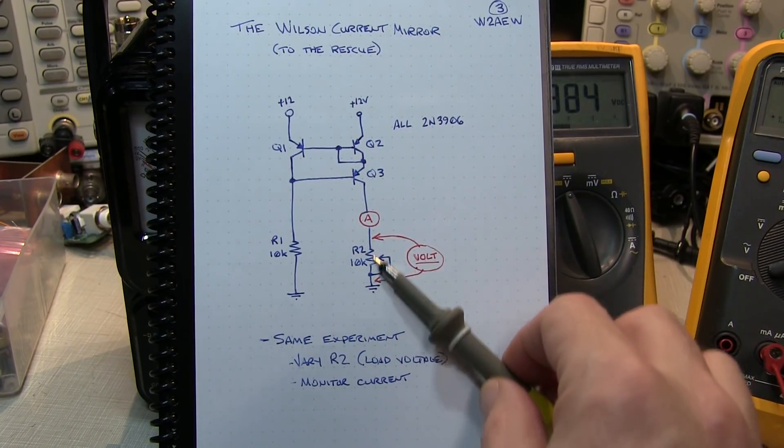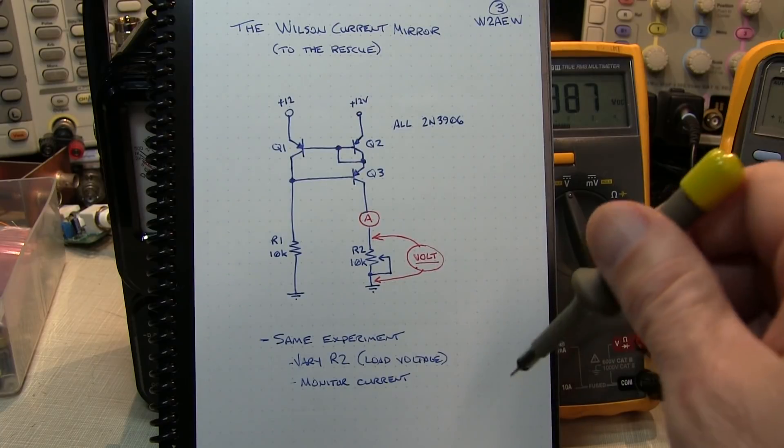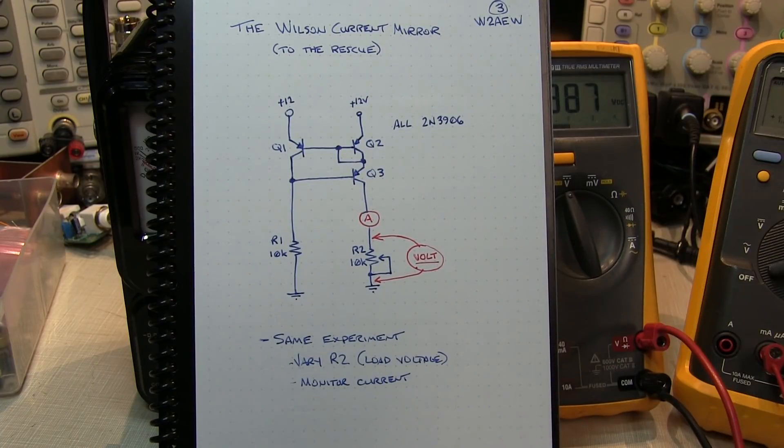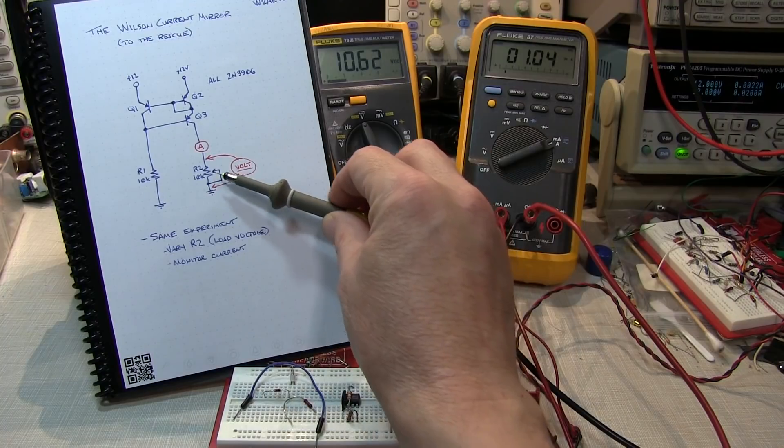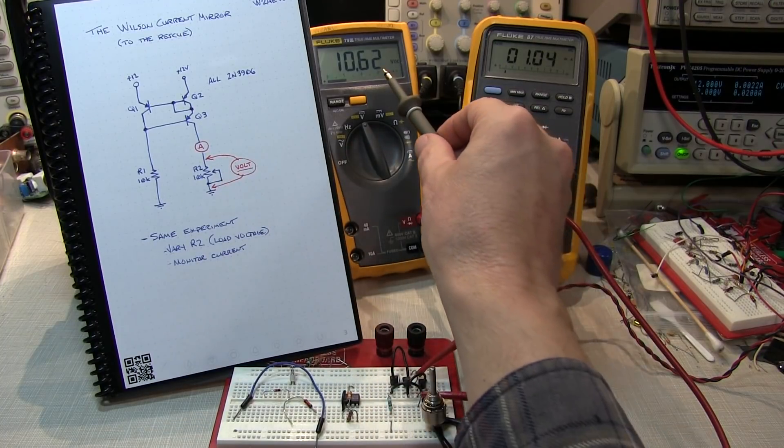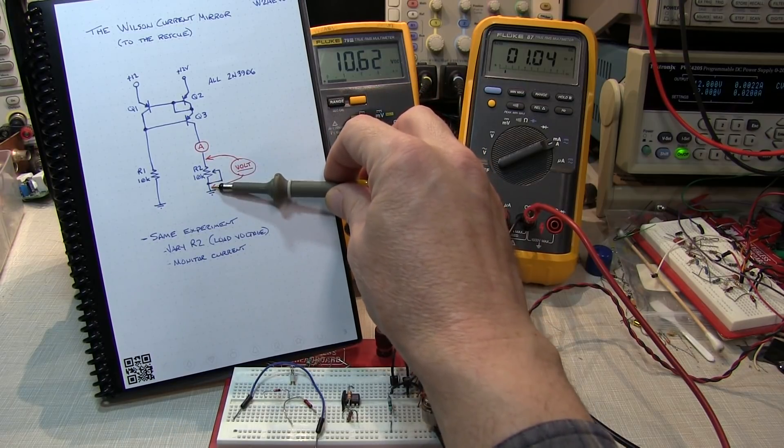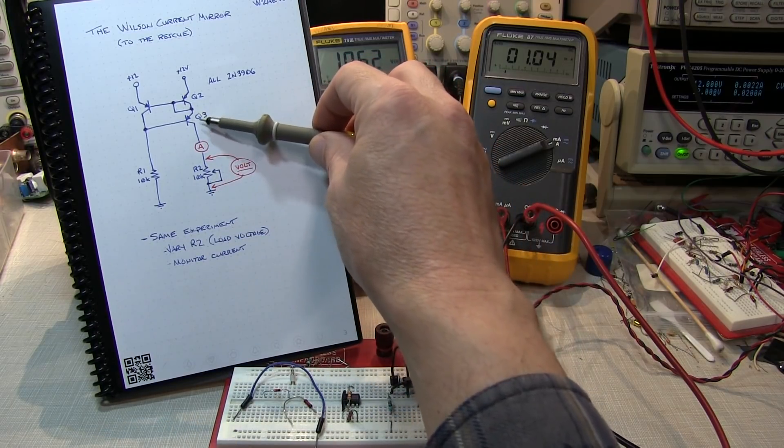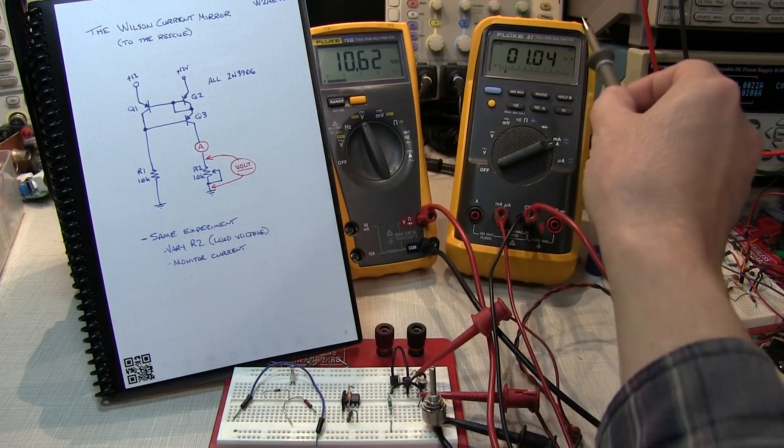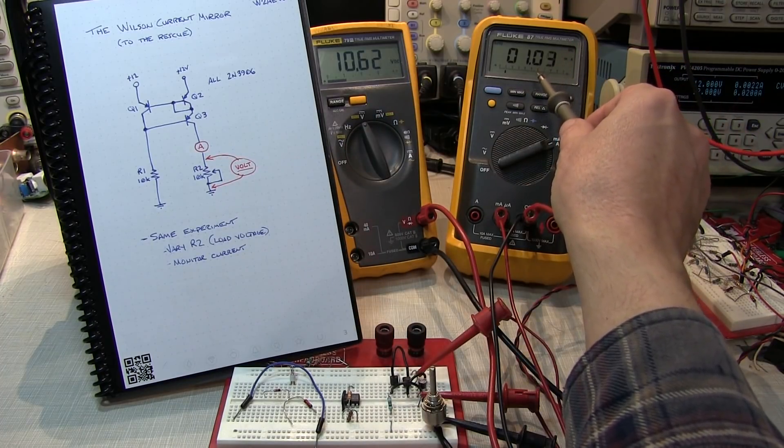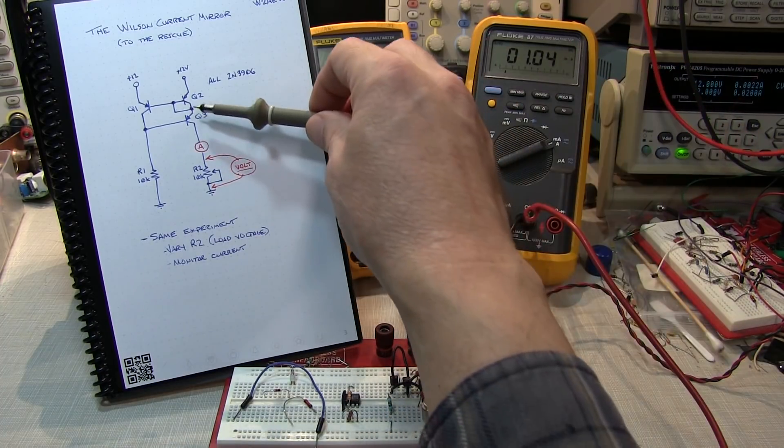So let's modify the circuit on my breadboard here to build the Wilson current mirror and measure how good its output impedance is. So with R2 dialed up to 10k, I'm seeing about 10.62 volts across that load resistor. So therefore, the collector emitter voltage is quite low. And I'm seeing about just over a milliamp, 1.04 milliamps of collector current.